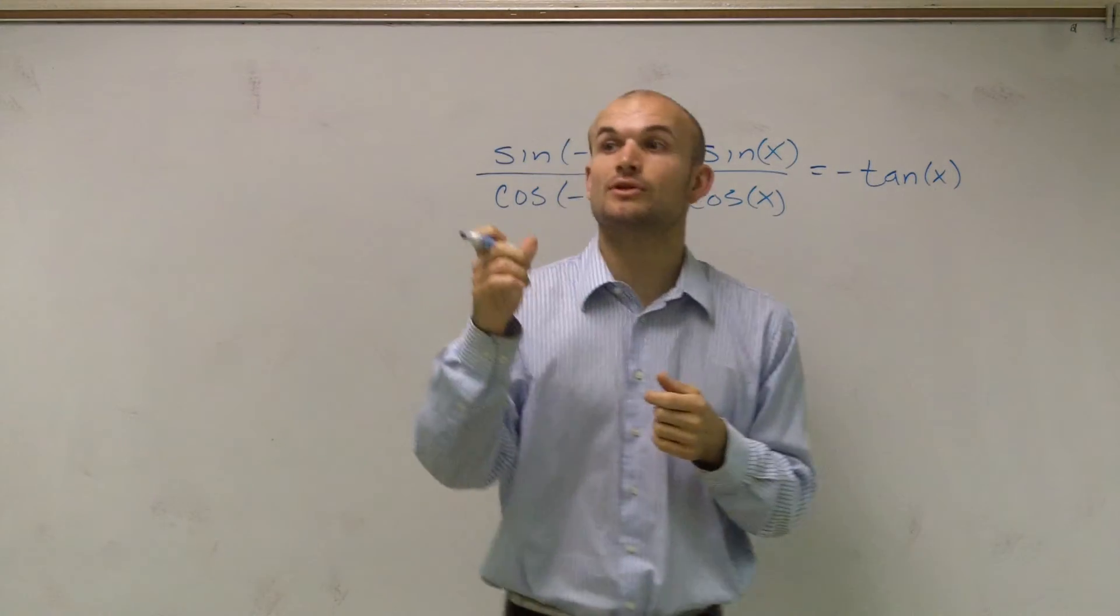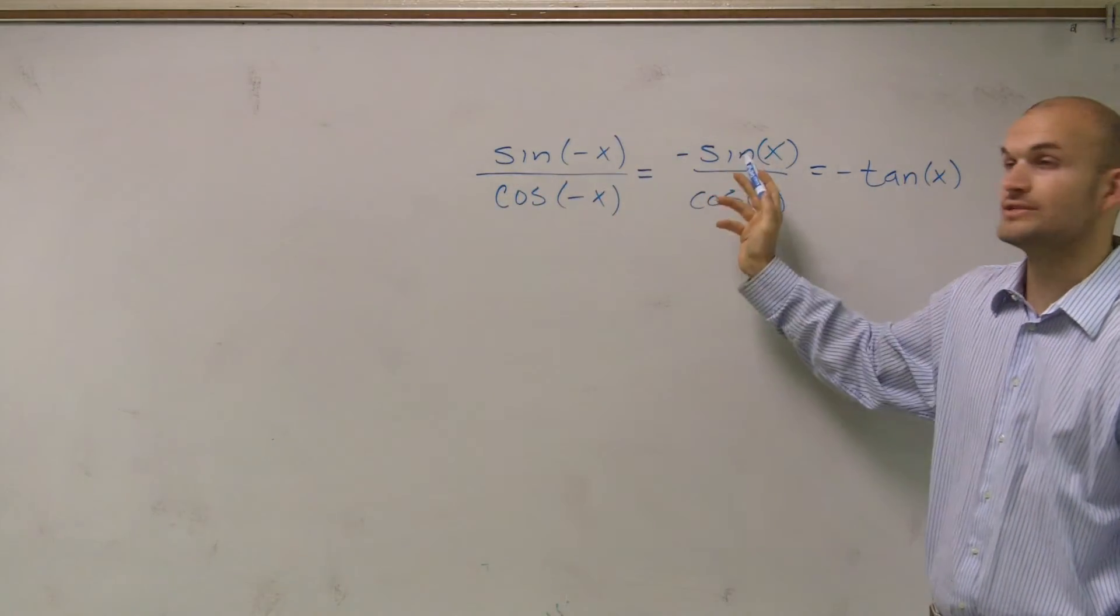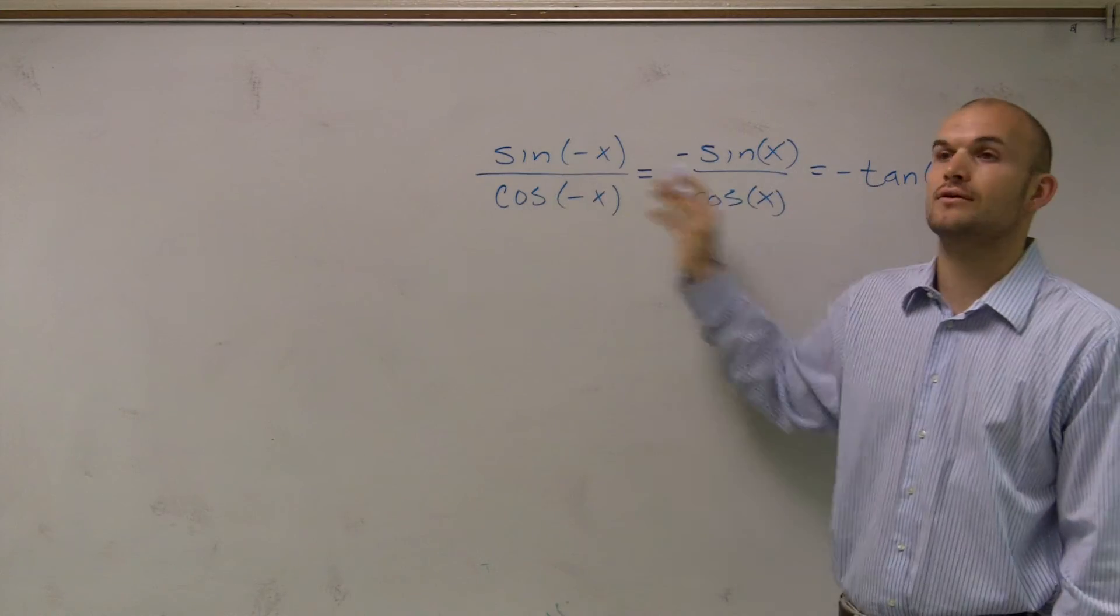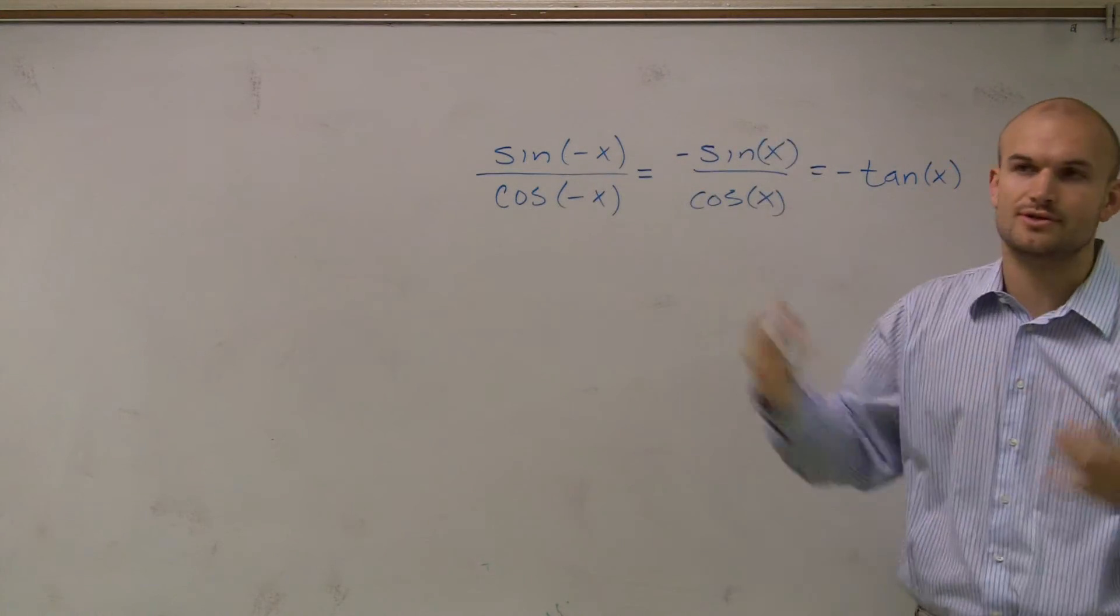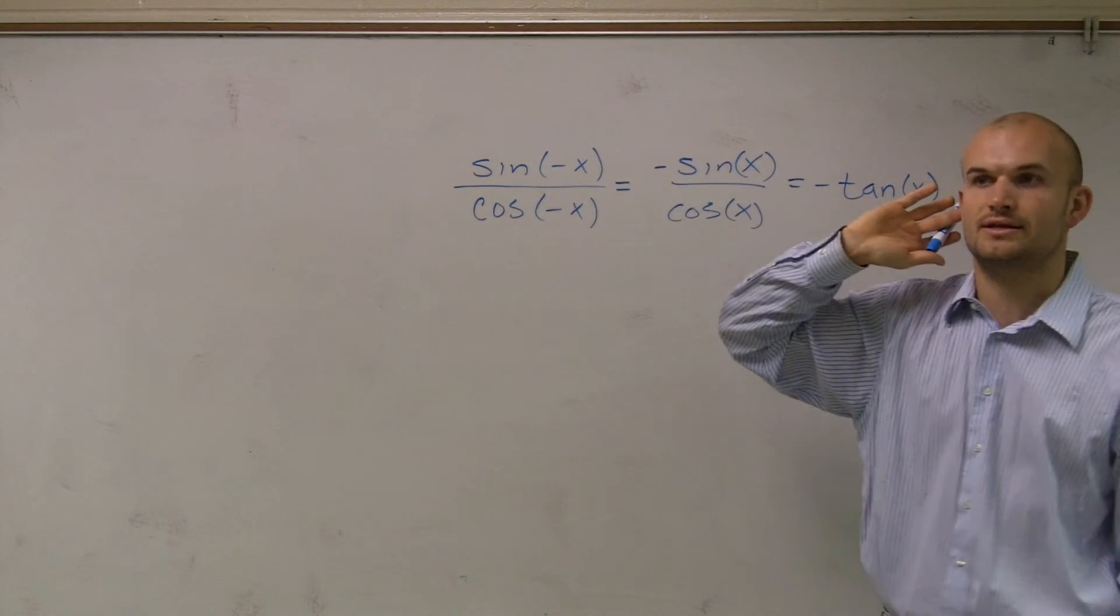Remember, look at the trig identity. The trig identity for sine of negative x is going to give you negative sine x. There's reasons why, which we'll explain and talk about later. But right now, just for the basics, if you want to think about it, just follow what the trig identity has.